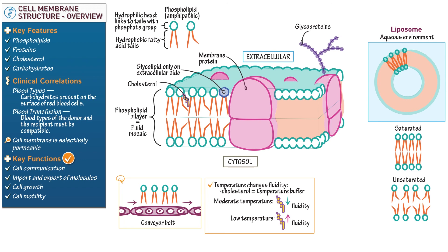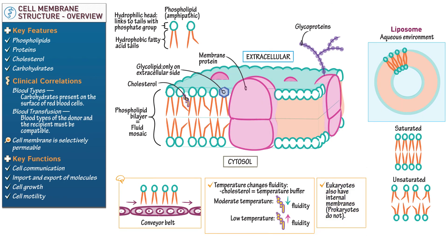We elaborate on the cell membrane's role in each of these processes elsewhere. As a final point, write that eukaryotes also have internal membranes within the cell — prokaryotes do not. These internal membranes have structures similar to the cell membrane.